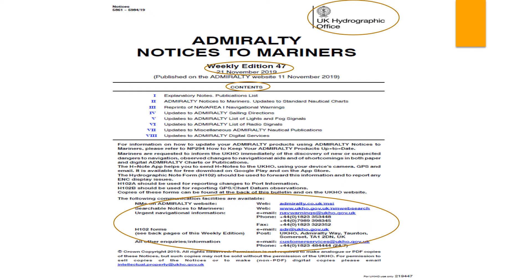The searchable Notices to Mariners facility allows you to go into the website and select the search option you require. You can search by chart number, by chart number plus a date range, or search for a single notice by notice number and year. If there is a particular chart you want to correct, you can type the chart number and all relevant corrections will appear. If you missed a previous notice, you can also search by notice number.